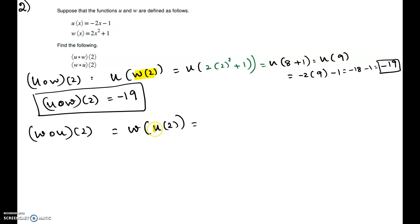First, we are going to do the u at 2, which means you have to go to the u function and change the x there by 2, keeping the outer function as is. I'm going to keep the w as is, work on the u at 2, that is negative 2 times 2 minus 1, w at negative 4 minus 1, w at negative 5.